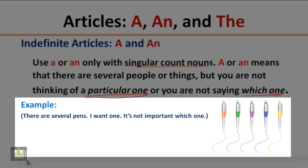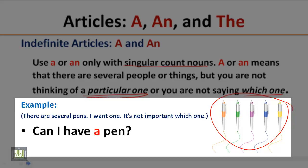Example: There are several pens. I want one. It's not important which one. So you say: Can I have a pen? Here you are not thinking of a particular pen. You just want any pen.